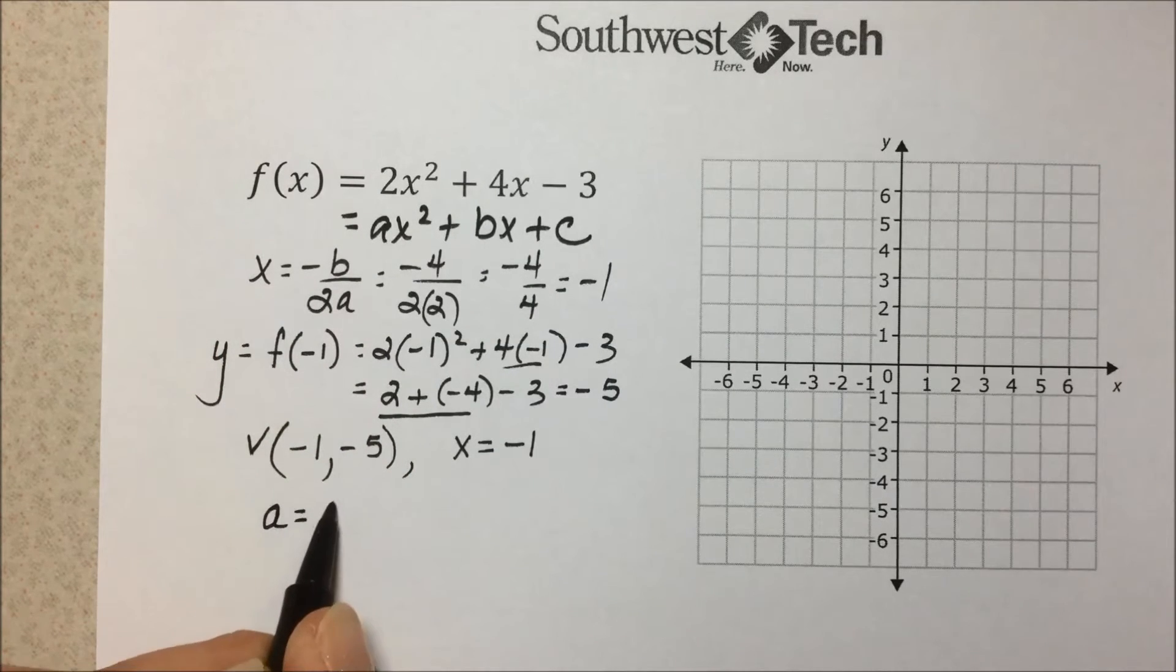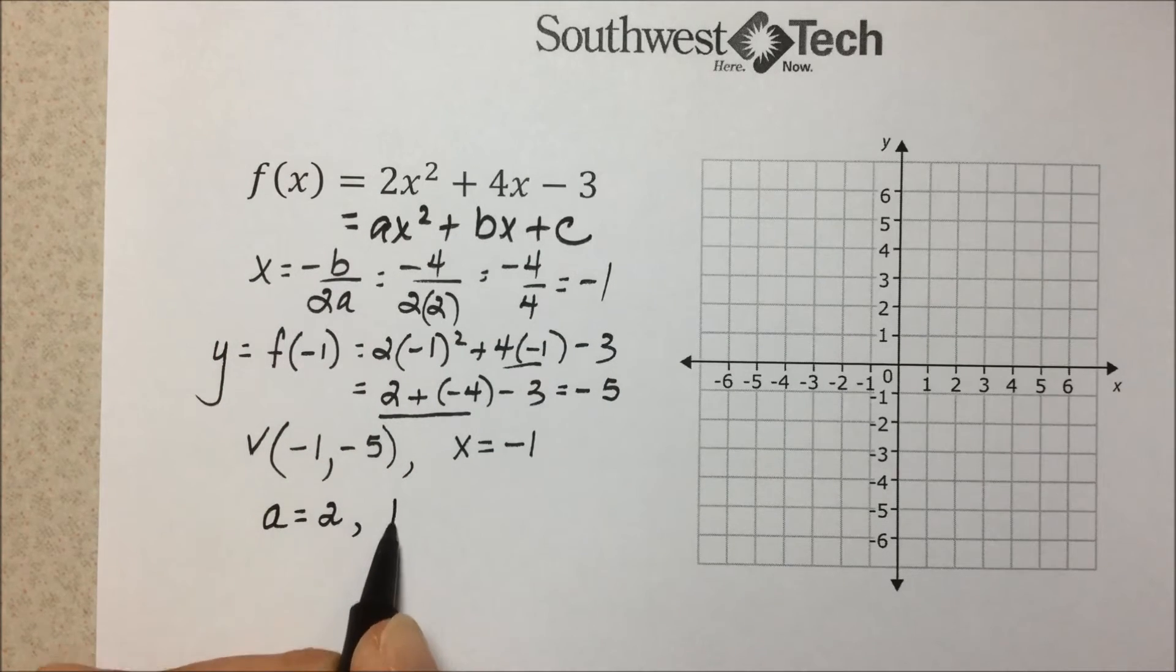To determine which way this parabola opens, we'll look at a. a is 2, it's positive, that means it's going to open upward. And in terms of shape compared to the standard basic y = x²,